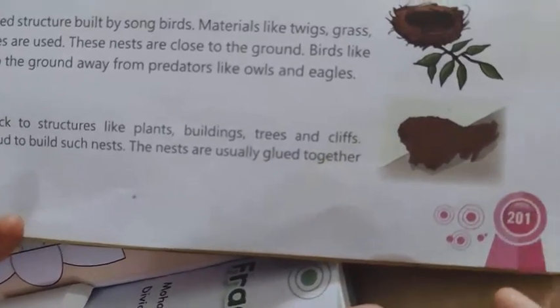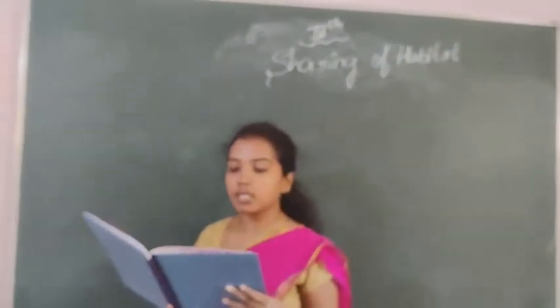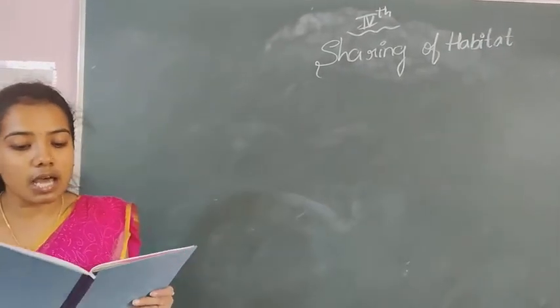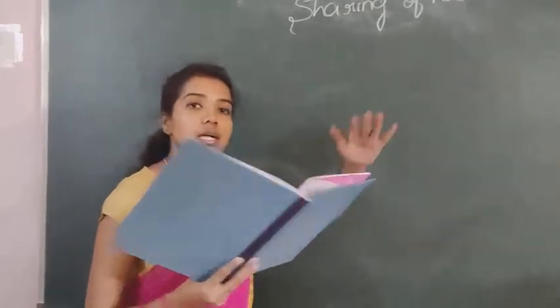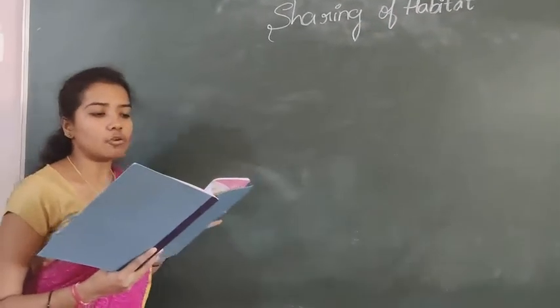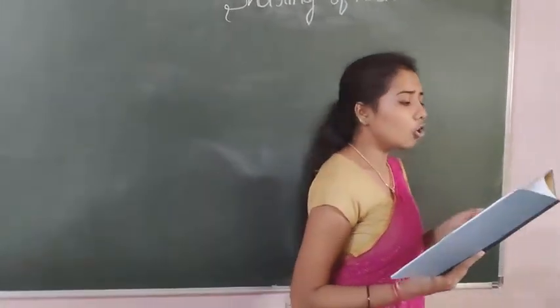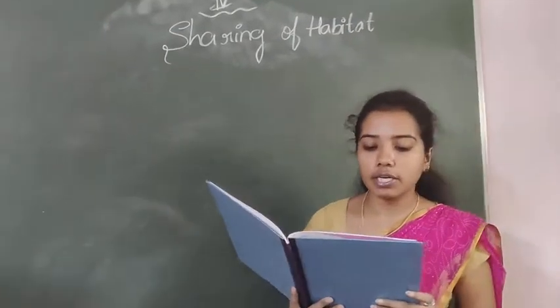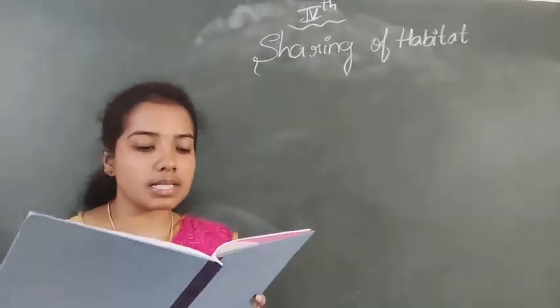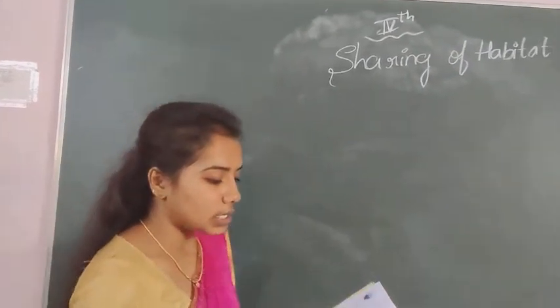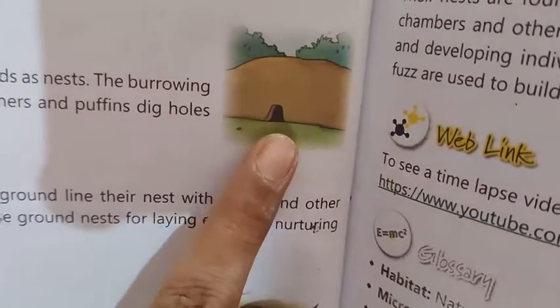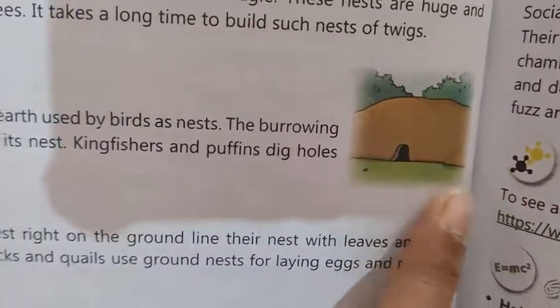Some nests are huge and high up on the tree. It takes a long time to build such a nest of twigs. Earth hole nests are holes already dug in the earth and used by birds as a nest — borrowing holes already dug, like in mud.